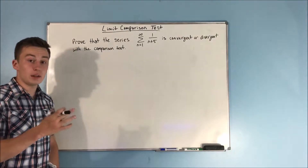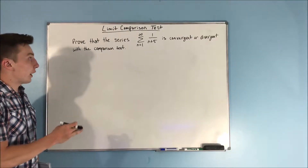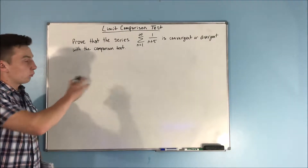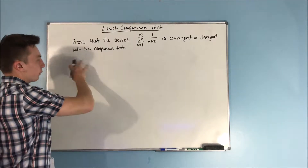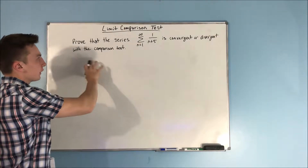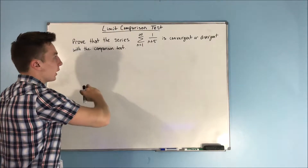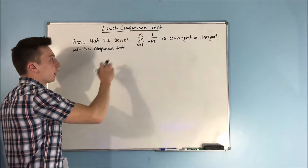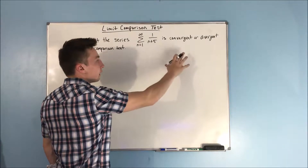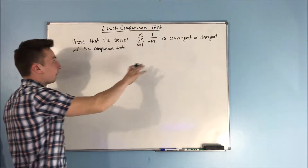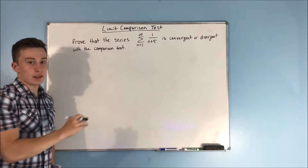This video is going to be on the limit comparison test. What if we were asked to prove that the series — the sum from n equals 1 to infinity of 1 over n plus 5 — is convergent or divergent with the comparison test?